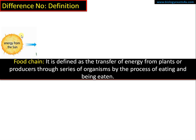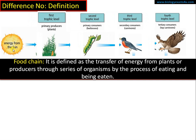As we all know, the ultimate source of energy is the Sun. The energy from sunlight is trapped by plants through photosynthesis, and that energy is transferred from plants to a series of organisms by the process of eating and being eaten — this is called a food chain.